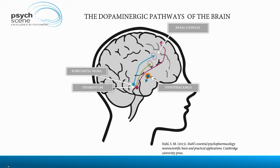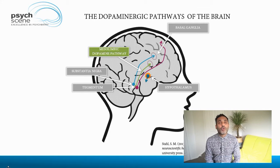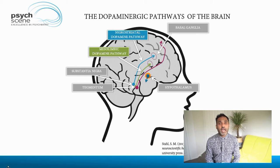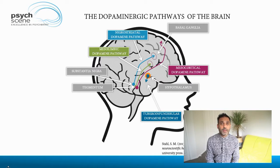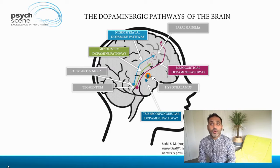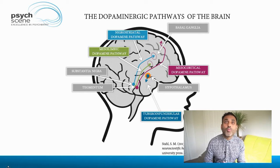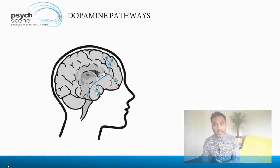Based on the connections of dopamine neurons to different parts of the brain, we have different pathways: the mesolimbic dopamine pathway, the nigrostriatal dopamine pathway connecting the substantia nigra to the basal ganglia, then the mesocortical dopamine pathway, and finally the tuberoinfundibular dopamine pathway. Let's look at each of these pathways and how they're responsible for clinical symptoms.